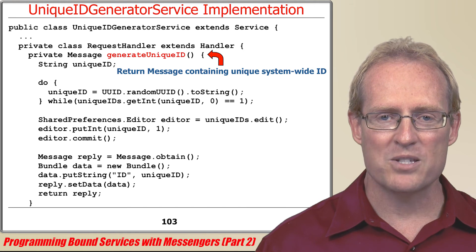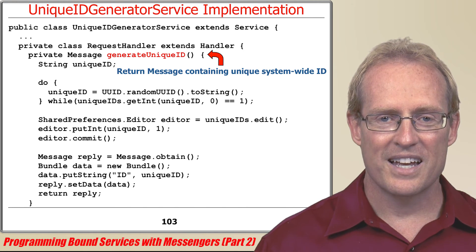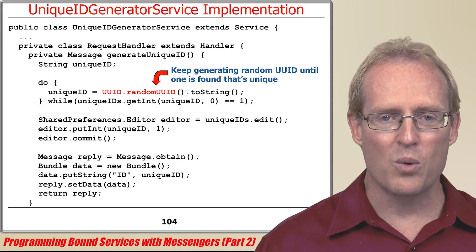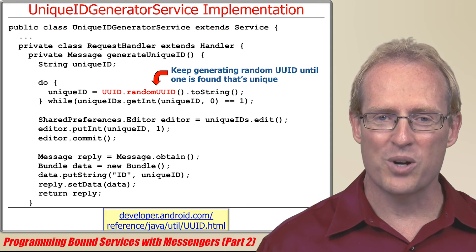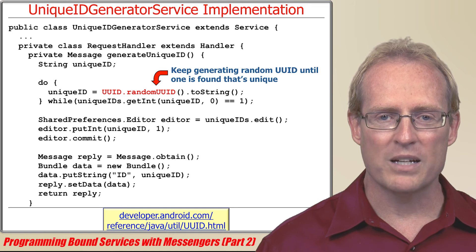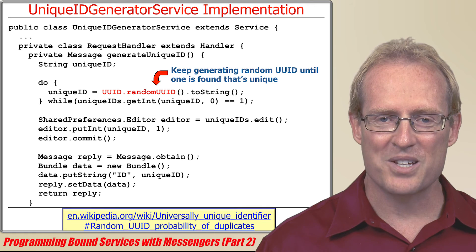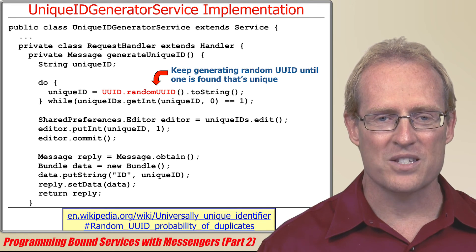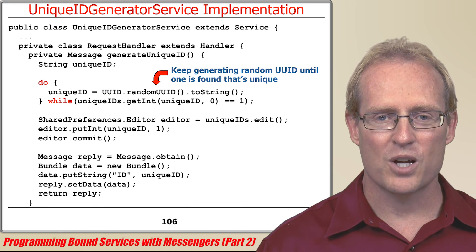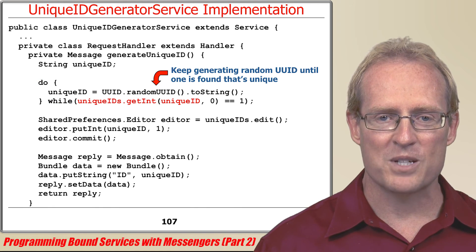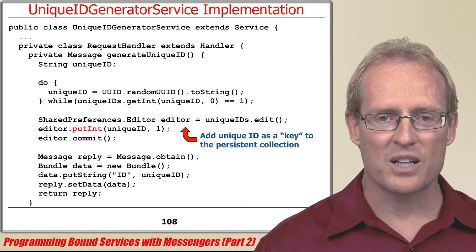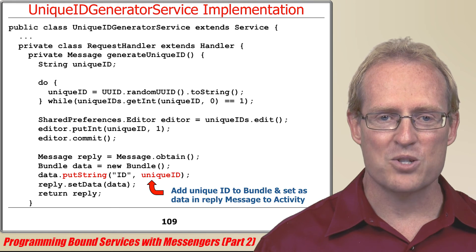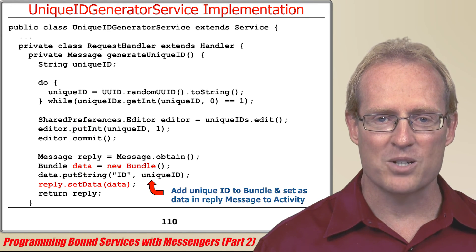The generateUniqueID method returns a message containing a unique system-wide ID. This ID is computed by calling the randomUUID method, which returns an immutable representation of a 128-bit universally unique ID. Although the value returned by randomUUID has a very low probability of duplicates, our implementation takes no chances. So it runs in a loop and compares the results returned by randomUUID with the values stored in the shared preferences object, which is implemented internally via a Java hash map. When a unique value is found, it's added to the persistent collection of unique IDs and then returned as a string in the bundled data of a reply message sent back to the activity.